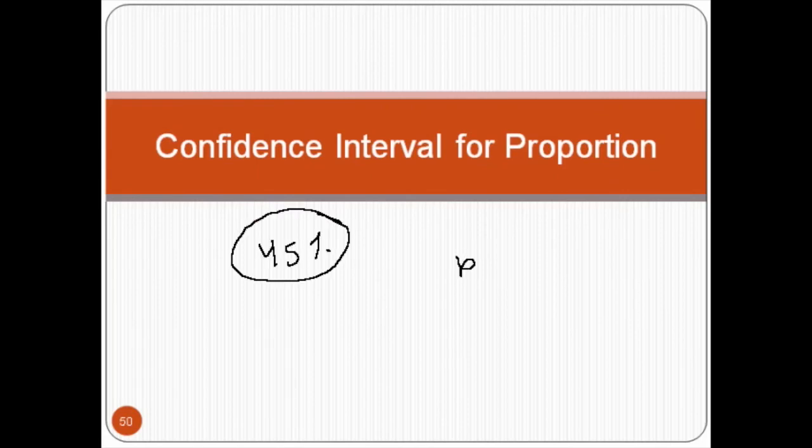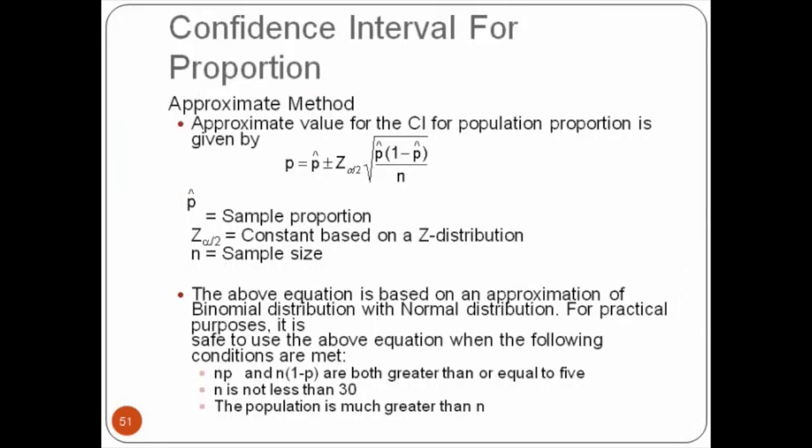Confidence interval will be P plus minus Z alpha by 2, where Z stands for standard normal variable, P times 1 minus P divided by N. This is actually given on the next slide. It also indicates under what conditions a binomial distribution becomes normal distribution.